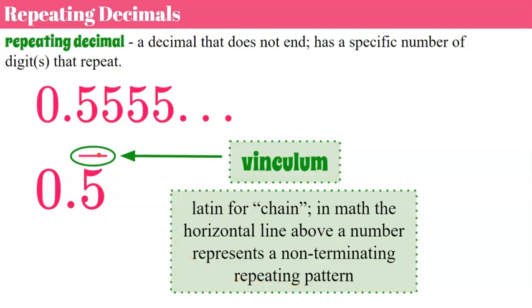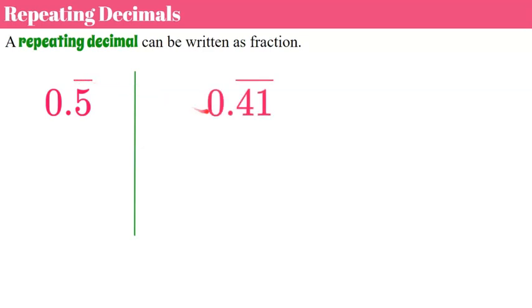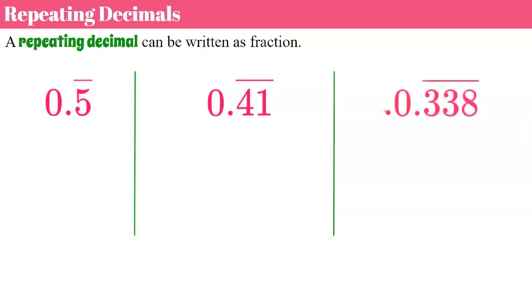That repeating bar could be above one digit, two digits, three digits — it can be above ten digits if necessary. In this case it's only above the five, meaning the five continues to repeat infinitely. Now let's look at repeating decimals more closely and write them as fractions. We have 0.5 repeating, 0.41 repeating — so that would be 0.41414141... — and 0.338 repeating, where all three digits repeat.